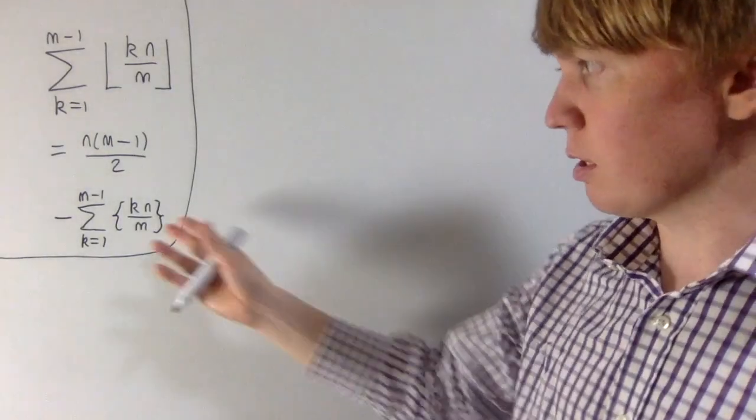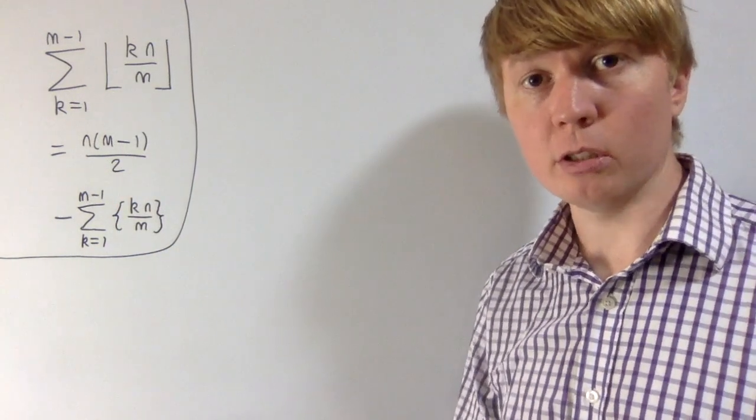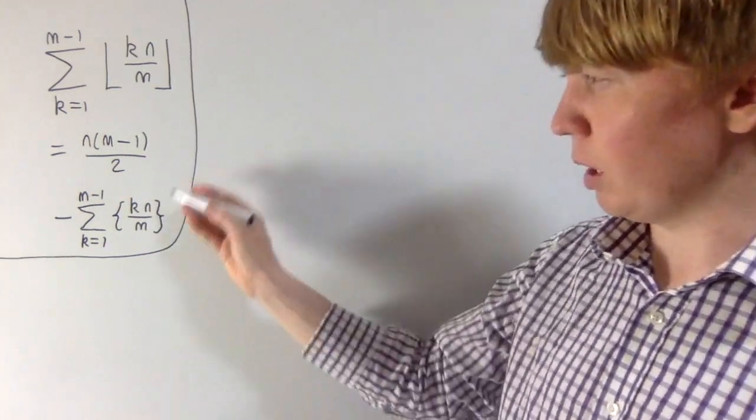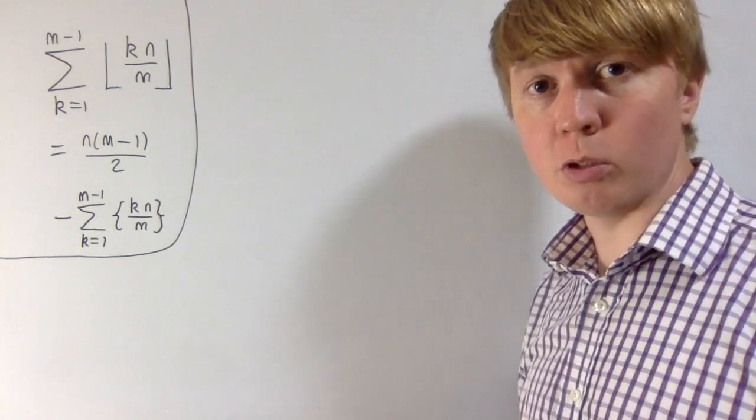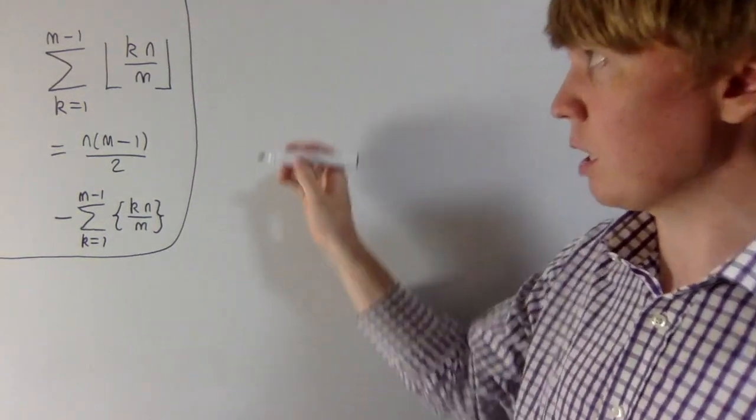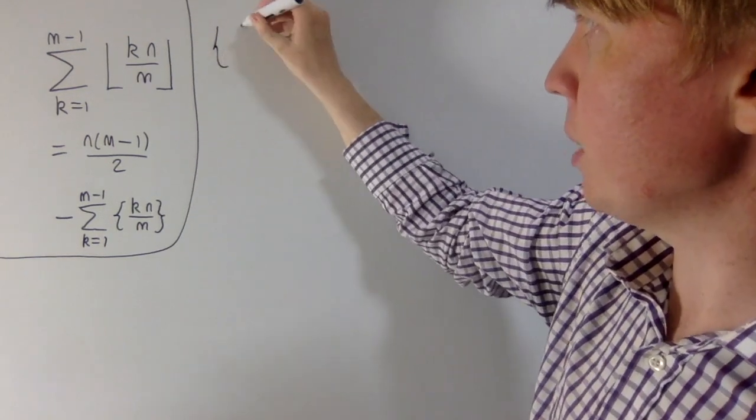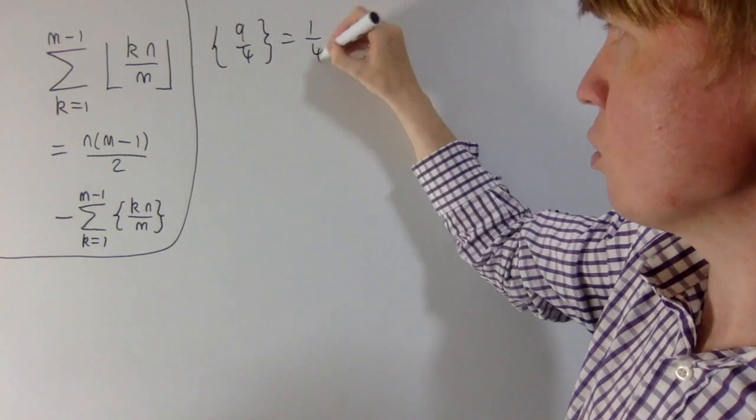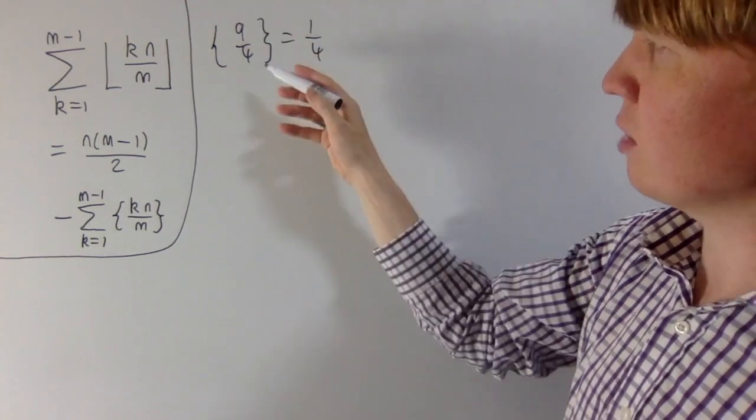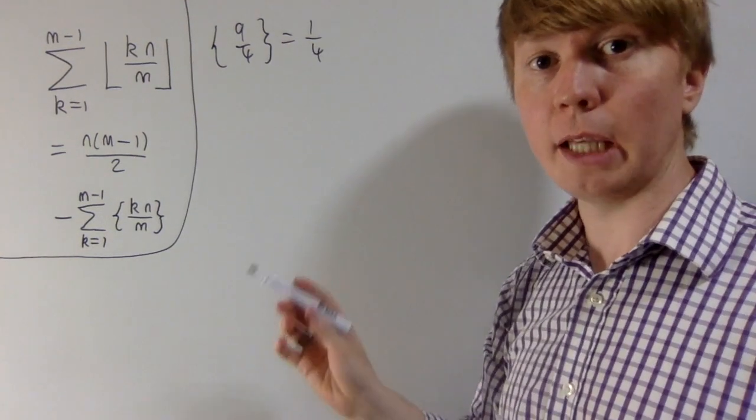To understand what's going on for this second sum, it can be helpful to look at some examples of the fractional parts of certain fractions. If you've got a fraction which is less than or equal to 1, then it just stays the same. But if you've got a top-heavy fraction, let's say the fractional part of 9 over 4, this turns into 1 quarter, because you're essentially writing this as 2 and a quarter and getting rid of the 2.